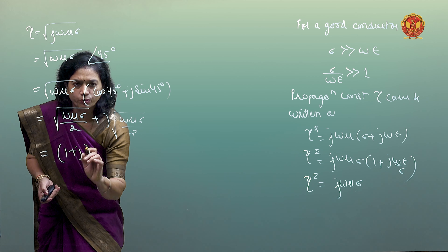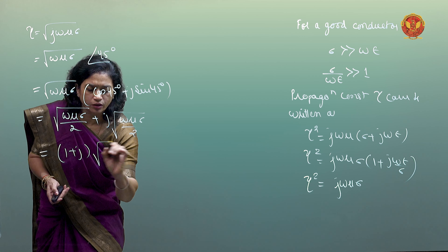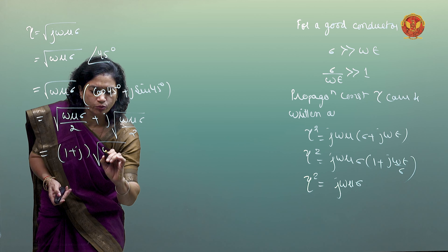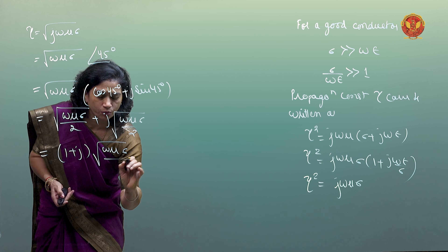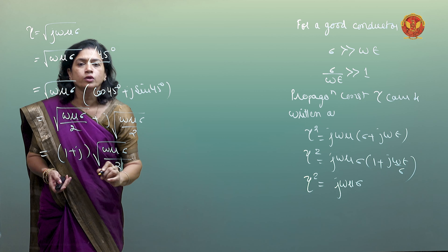Ultimately, the final expression is: gamma equals (1 plus j) times under root (omega mu sigma upon 2).